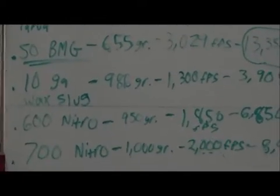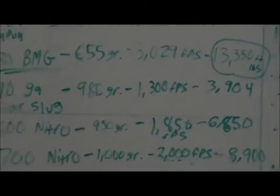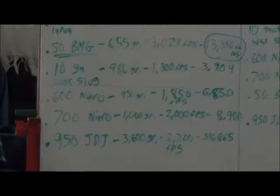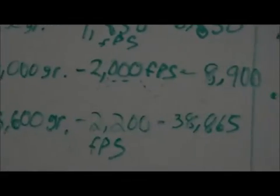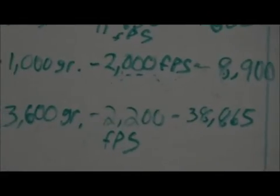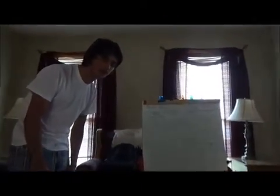Then you got a 10 gauge wax slug which has 3,904 foot-pounds. The 600 Nitro has 6,850 foot-pounds, the 700 Nitro has 8,900 foot-pounds. The largest caliber ever made, which is basically a cut down 20 millimeter shell called a 950 JDJ or JD Jones, goes 38,865 foot-pounds.